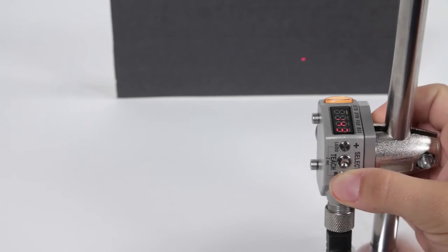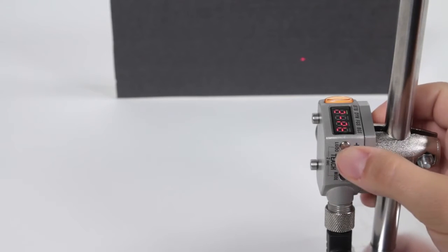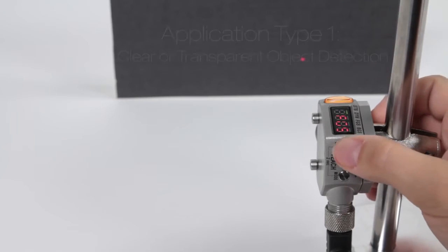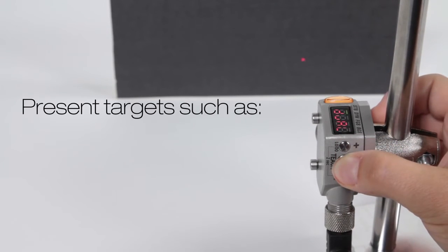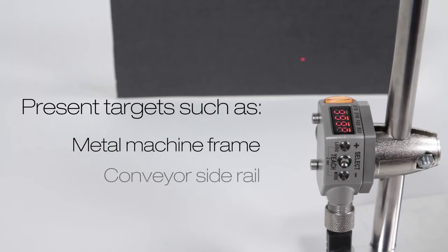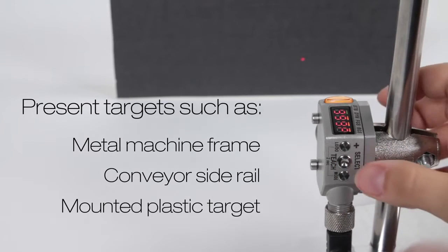Dual teach mode is now a standard mode in the Q4X sensor. It can solve two types of new applications. For clear or transparent object detection, present a steady reference target such as a metal machine frame, conveyor side rail, or a mounted plastic target.